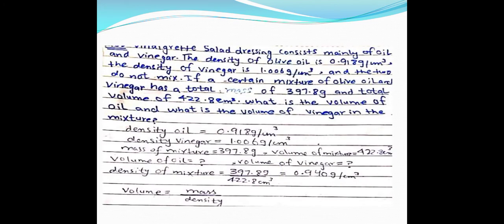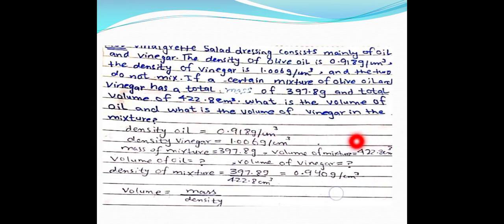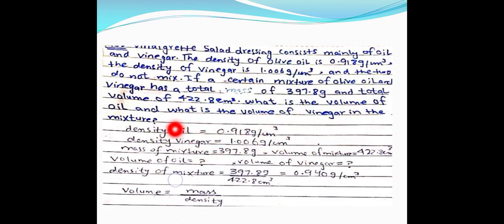For the olive oil and vinegar mixture problem: we are not given individual masses or volumes, but we do know the total mass and total volume of the mixture. The density of the mixture = total mass / total volume, which we calculate first. We then need to find the individual volumes of oil and vinegar separately.